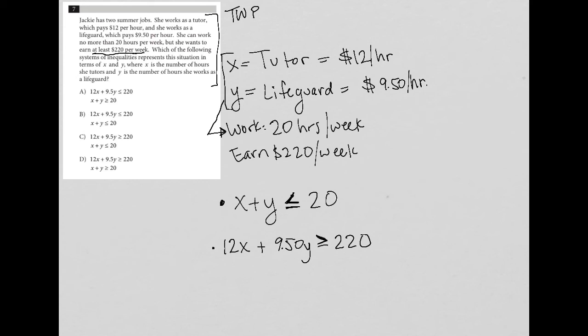So these are the two statements from just the translation. Now I look over to my answer choices and I see that everything looks pretty much like what I have, except for the inequalities. So let's try out choice A. Choice A says that 12X plus 9.5Y is less than or equal to $220. Well, that's incorrect. She wants to make at least $220. So that's gone. Choice B is the same. So that's gone.